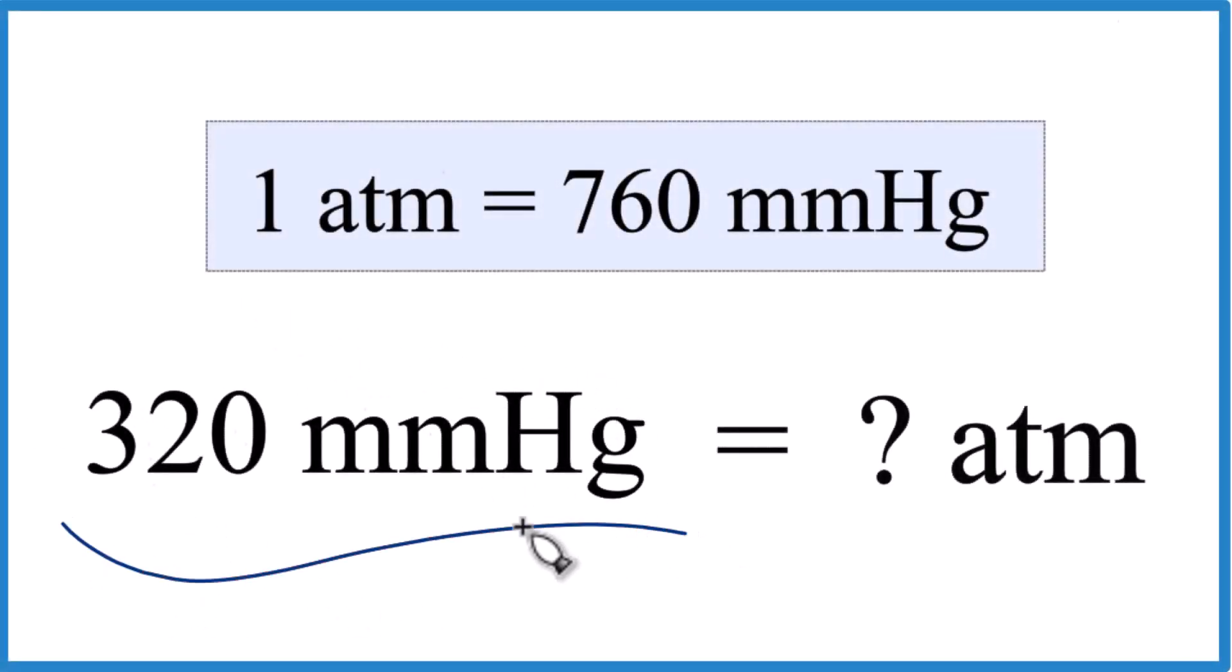Let's convert 320 millimeters of mercury to atmospheres. Here's how we do it. Our conversion factor is that one atmosphere equals 760 millimeters of mercury.